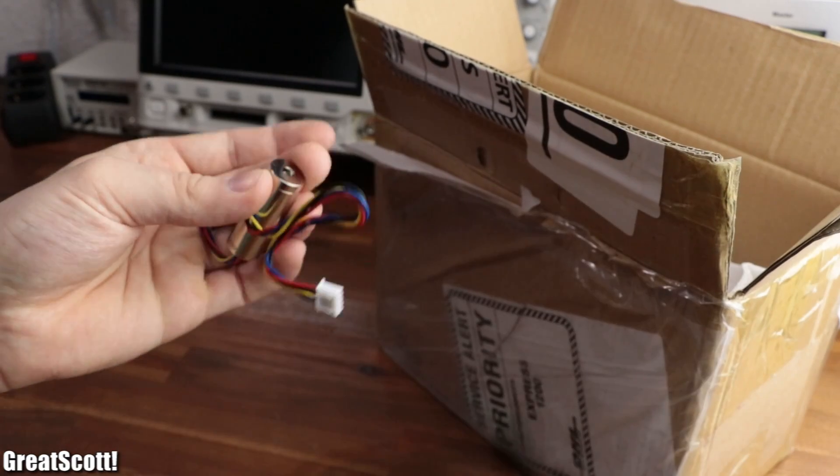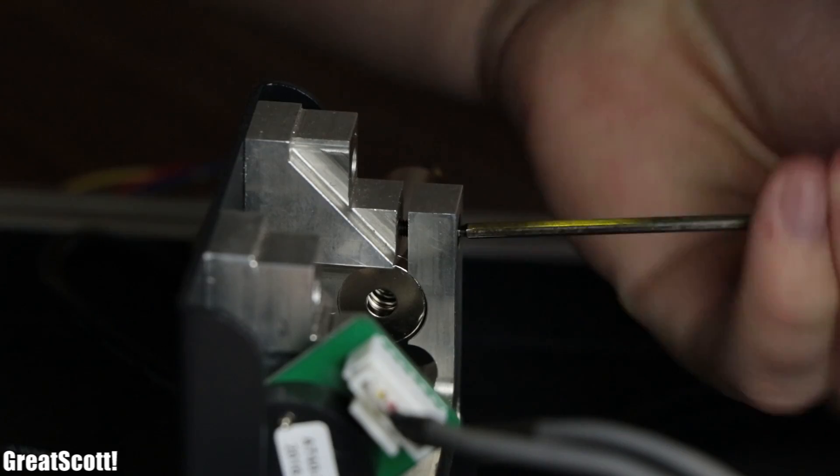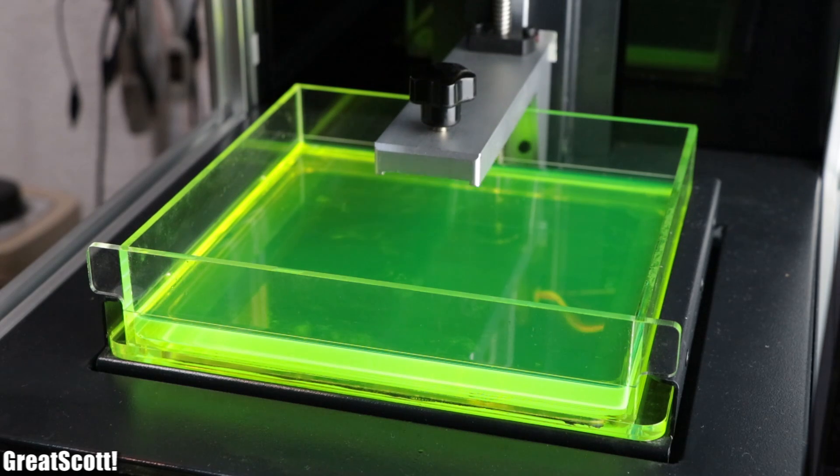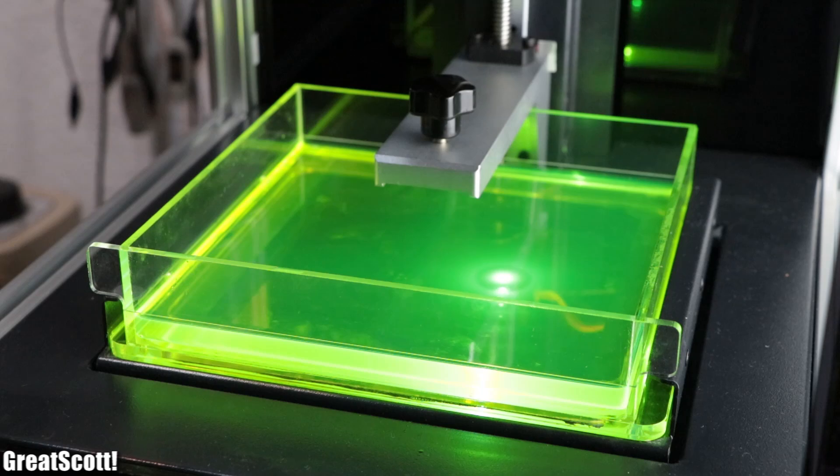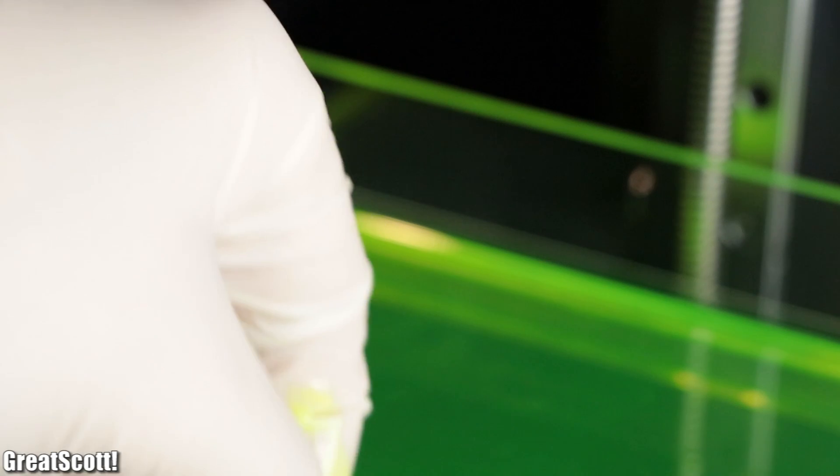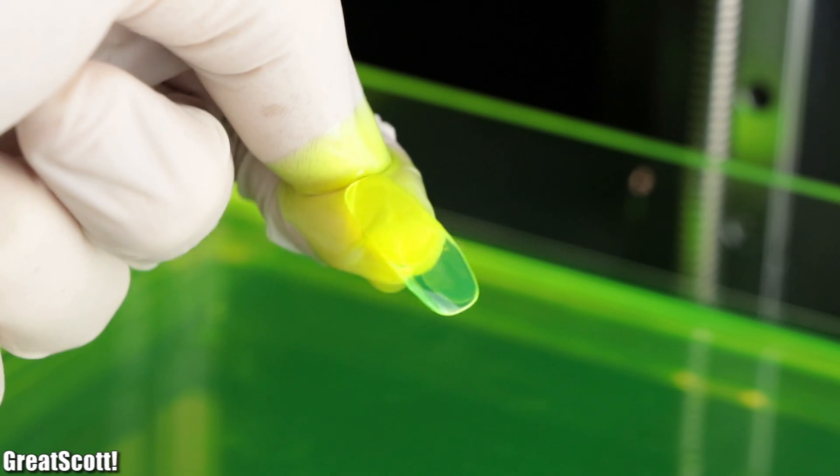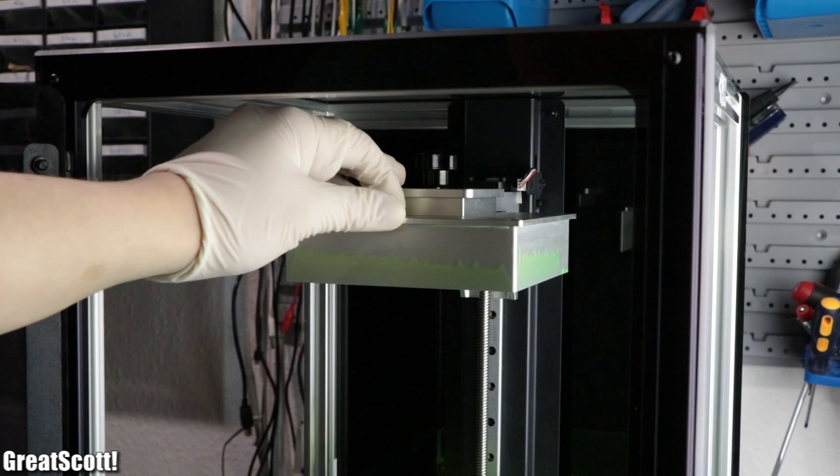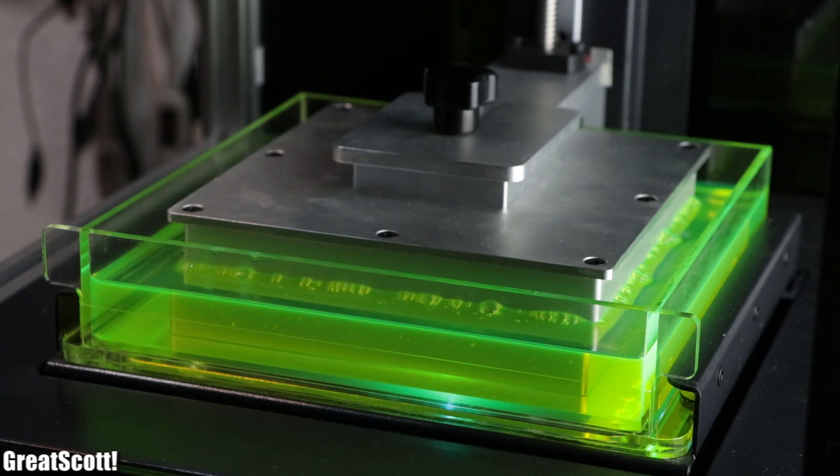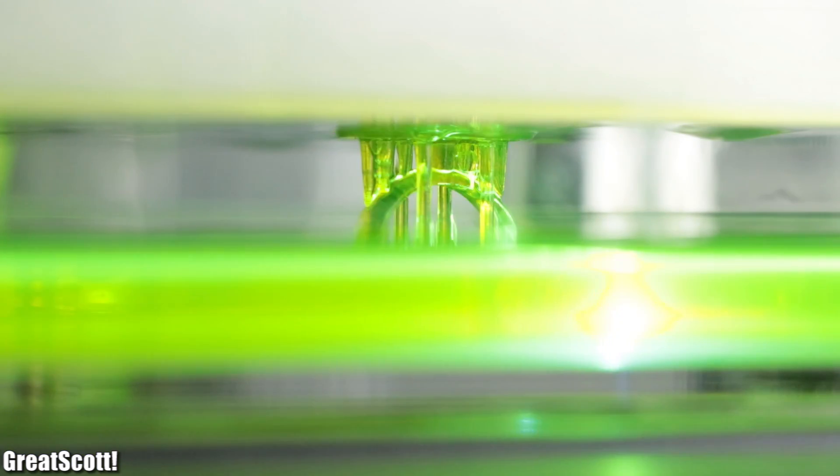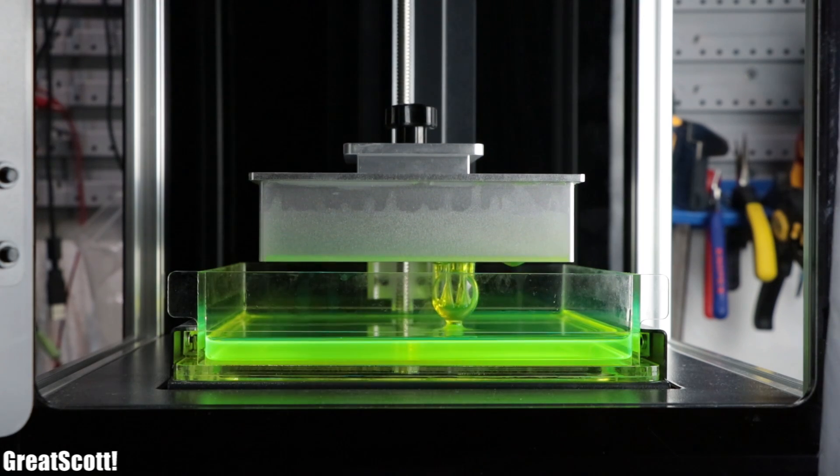Thankfully though, the manufacturer sent me a new one, which I immediately secured in its rightful place. After trying out the ring code once again, this time without the build platform, I immediately noticed that the laser was much brighter and also focused. Therefore, it was no surprise that finally something solid was created with the resin. And after reinstalling the build platform and restarting the print, the machine finally worked like it was supposed to and created the intended object without any problems.